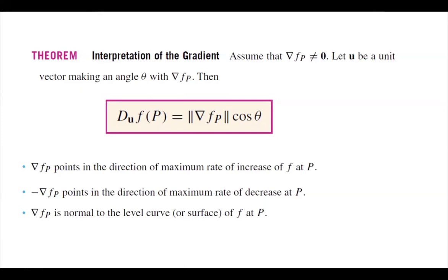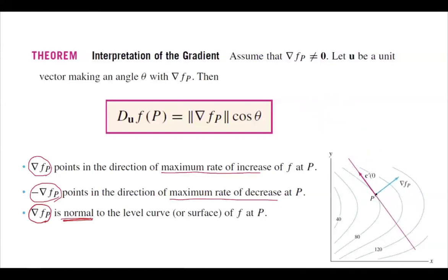If asked to find the maximum rate of increase, we work with the gradient of f. If asked for the maximum rate of decrease, we work with the negative gradient of f. If asked to find a normal vector to the level curve, level surface, or tangent plane, we calculate the gradient of that function. The gradient is always orthogonal to the level curves at point P in 2D, and orthogonal to the level surface in 3D.